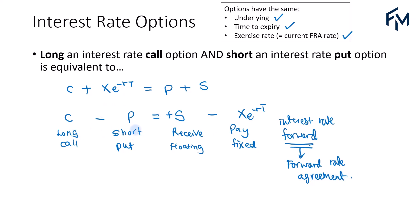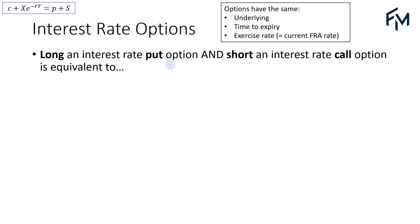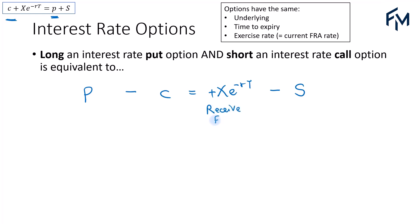To recap: a long call and a short put option would be equivalent to a receive floating, pay fixed forward rate agreement. Now what if you have a long interest rate put and a short interest rate call option? That would be equivalent to a long put and a short call, which is equivalent to the risk-free bond minus the underlying. So in this case, this is a plus, so we receive fixed, and minus means you pay floating. So a long interest rate put and a short interest rate call option is equivalent to a receive fixed, pay floating FRA.